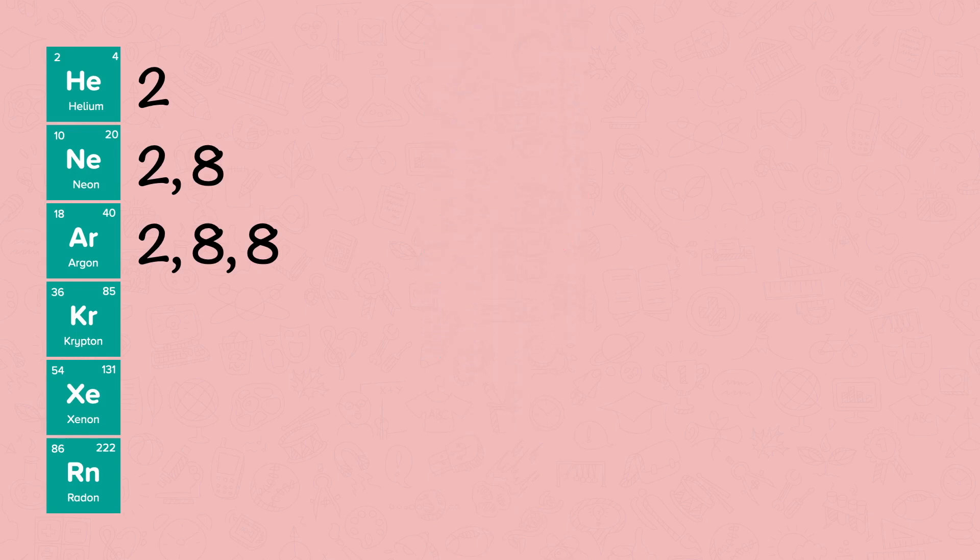Elements in group 0 exist as monatomic gases. This means they are found as single atoms and not molecules. Elements in group 0 are non-flammable. This means they won't set on fire easily.